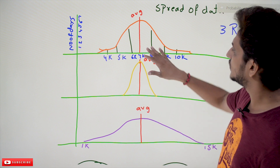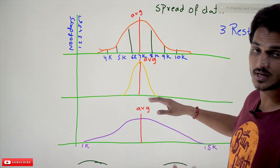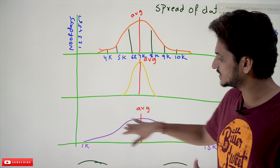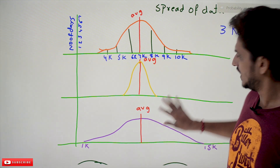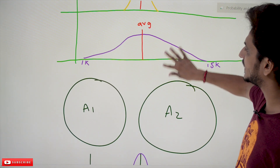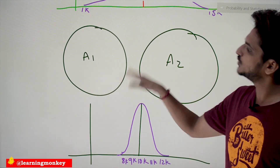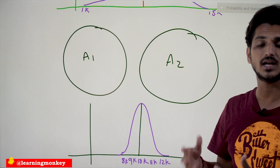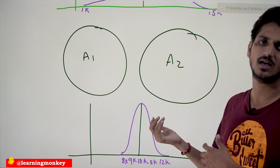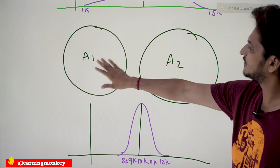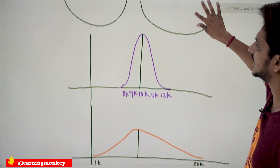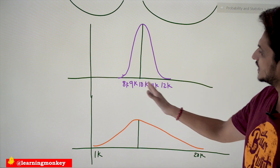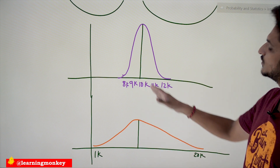This is the point to understand — uncertainty of the data means you have to analyze much more about this data. Let's take one more example for better understanding. Consider two areas — area 1 and area 2. If you collect the data of house prices in these areas and plot the distributions, this is area 1 and this is area 2.